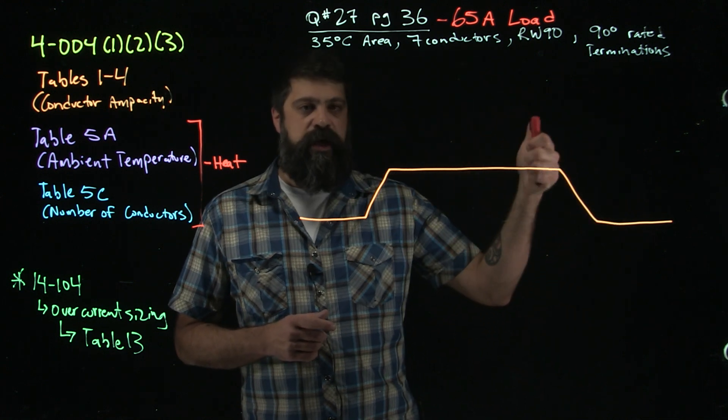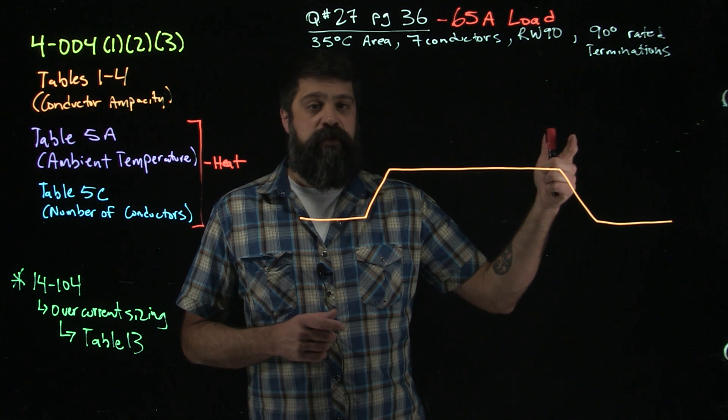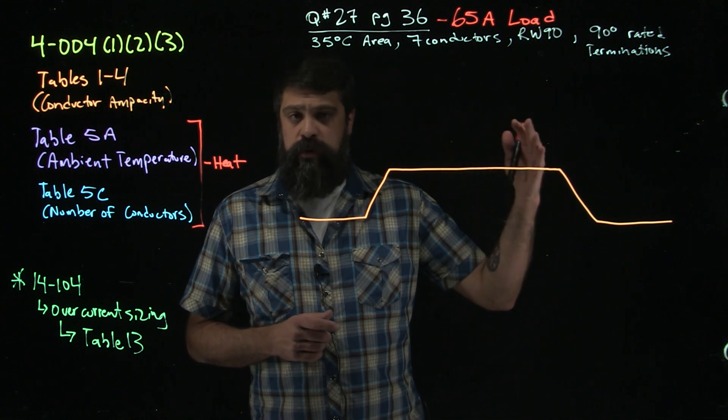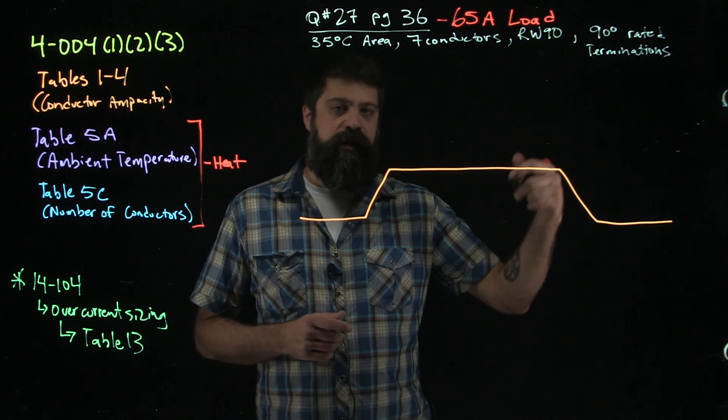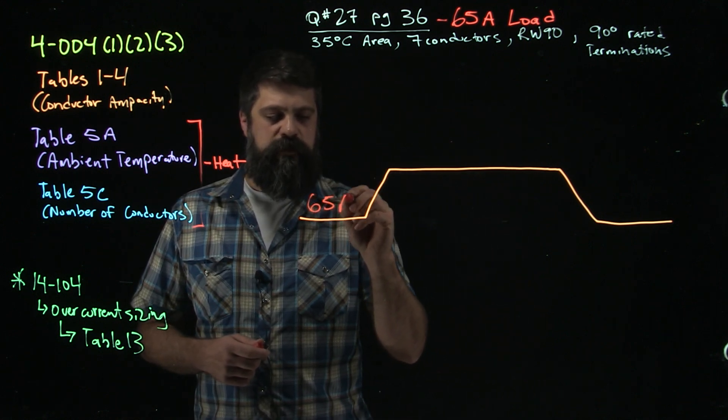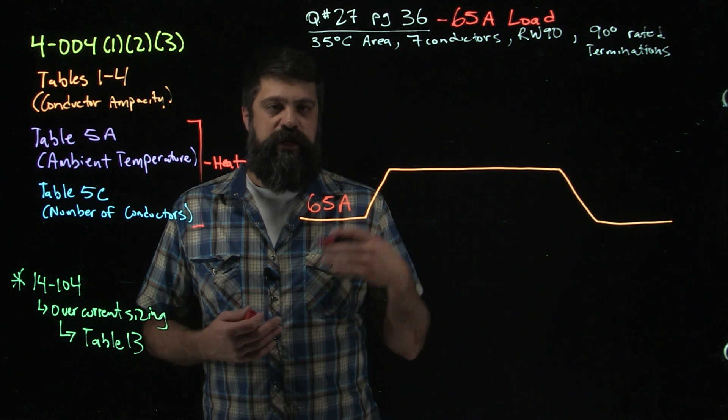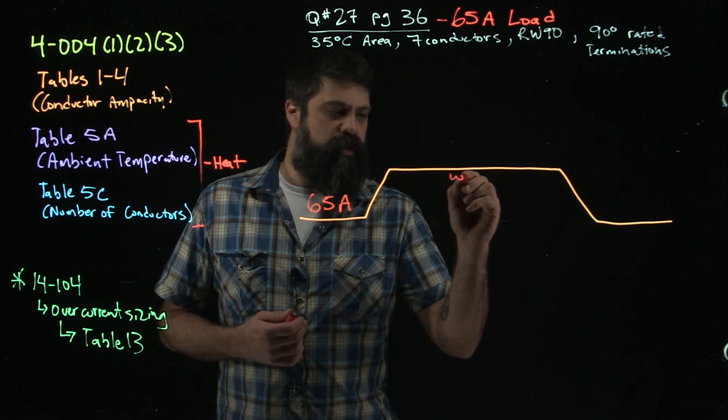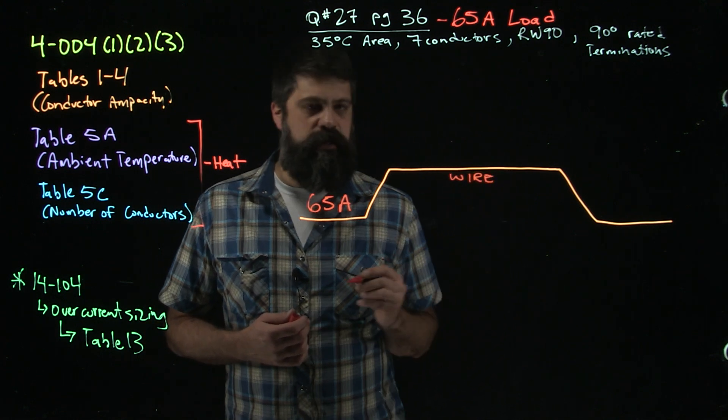90 degree rated terminations means the panel, the equipment, is all rated for 90 degrees. So now when we go into our tables we're going to be looking in that 90 degree column. So we start off over here with a 65 amp load. That's what we're going to be starting with. We need to get it there, so of course we're going to have to run some wire to get over to it.